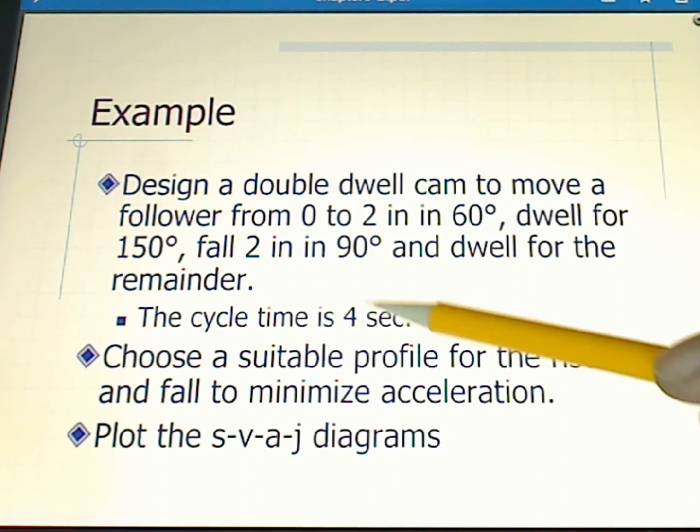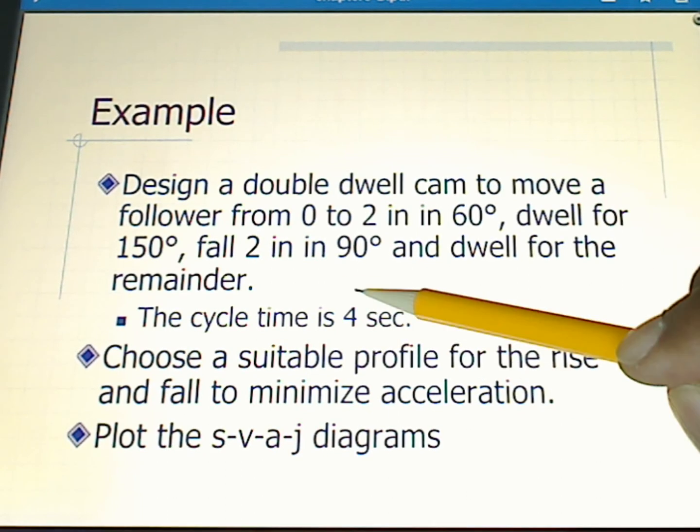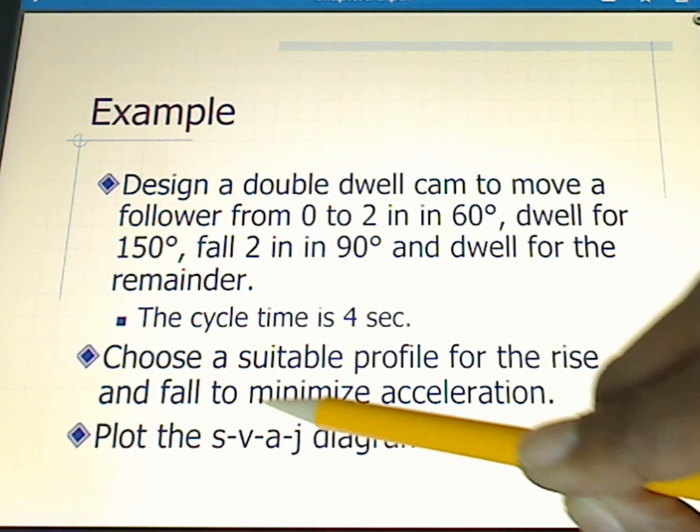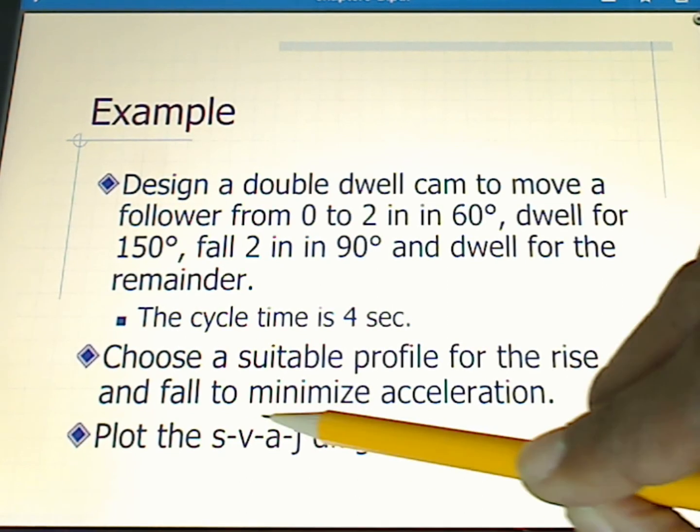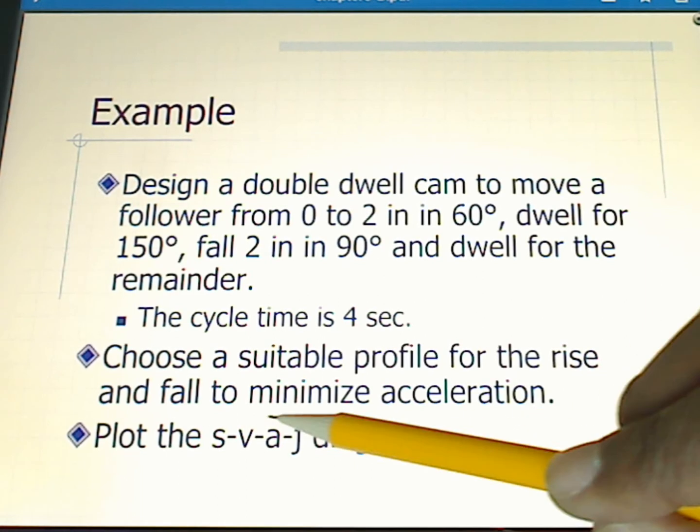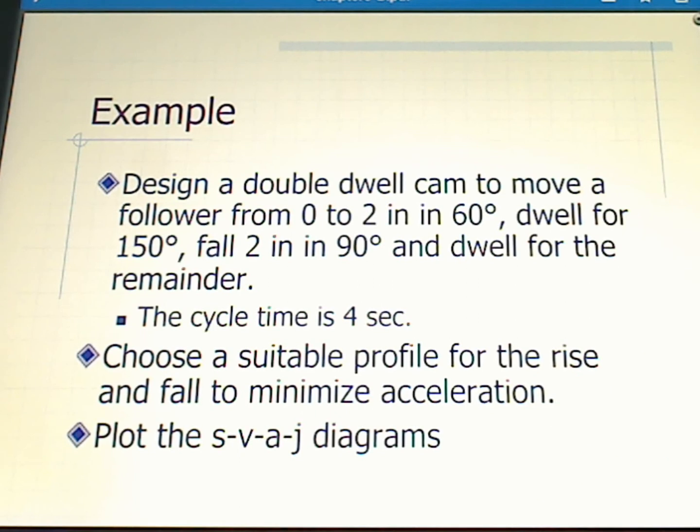Our cycle time is going to be four seconds, and so this is how we would determine the angular velocity for our cam. The angular velocity in this case would be 2π divided by four seconds. We choose a suitable profile for the rise and fall to minimize acceleration. This is an important piece - it's telling us what kind of function to use. We need to use a function that minimizes acceleration.